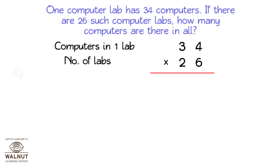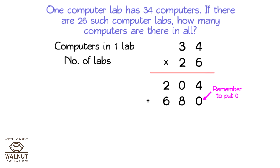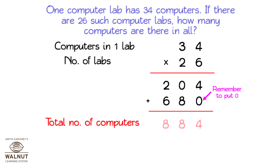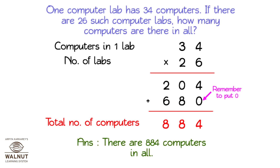We start multiplying the units. We multiply the number at the top by the digit in the units place. Then we put in a 0 and multiply with the digit in the tens place. Then we add up the two products that we have found and we get the final product. There are 884 computers in all.